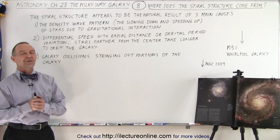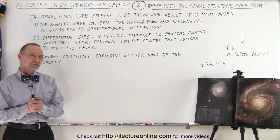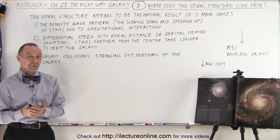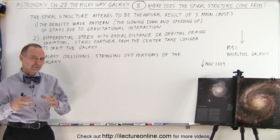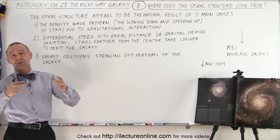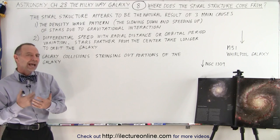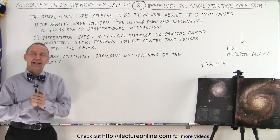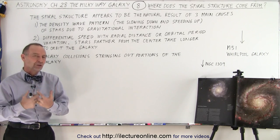Welcome to ElectronLine. Why are there different shaped galaxies? We have the regular galaxies, we have spiral galaxies, we have elliptical galaxies. So why do we have the spiral galaxies? Where did that spiral structure come from?